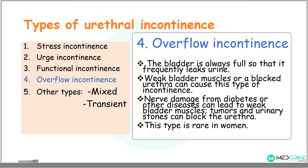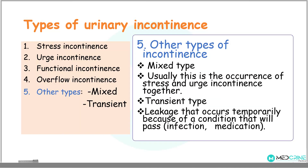In overflow incontinence, the bladder is always full, so it frequently leaks out urine. Weak bladder muscles or a blocked urethra can cause this type of incontinence. Nerve damage from diabetes mellitus or other diseases may weaken bladder muscles, and tumors or urinary stones may block the urethra. Overflow incontinence is a rare type in women. The last type is mixed or transient incontinence. Mixed incontinence is the co-occurrence of stress and urge incontinence. Transient incontinence is leakage that occurs temporarily due to a condition that will eventually pass, for example, infection or medications.